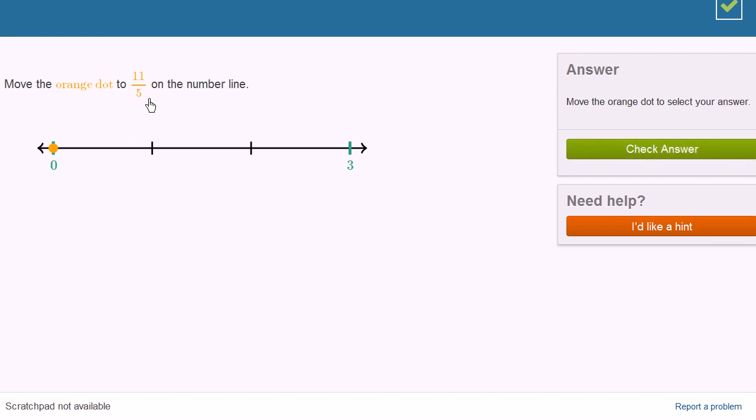Move the orange dot to 11 fifths on the number line. We can do it both ways again. 5 goes into 11 two times, and then you have 1 left over. So you could call this 2 and 1 fifth. So we could go 1, 2, and then 1 fifth.